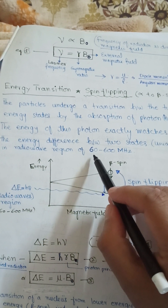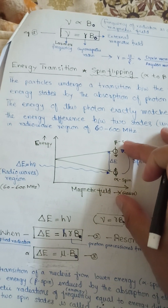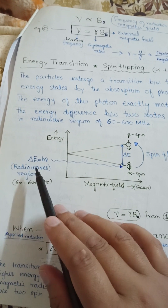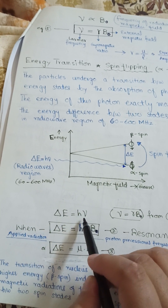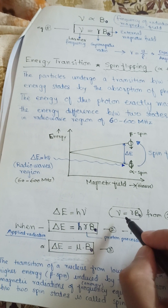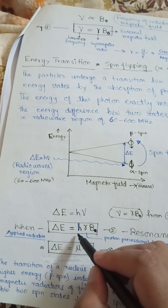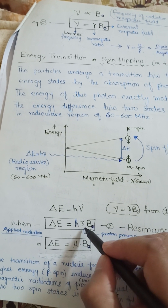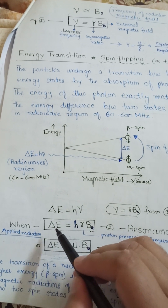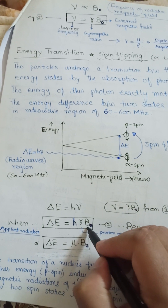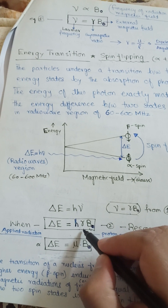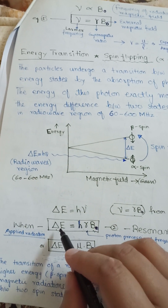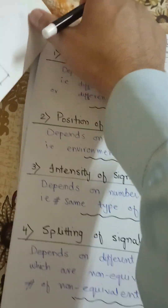This energy difference corresponds to the radio frequency wave region, which is 60 to 600 megahertz. The diagram shows the spin flipping from alpha to beta spin state and the energy absorbed by the nucleus: delta E equals H times nu, where nu is the Larmor frequency, which equals gamma times B₀. Therefore, delta E equals H times gamma times B₀. This is the gyromagnetic ratio. So the energy difference between the two spin states equals Planck's constant times the gyromagnetic ratio times the external magnetic field. If we know the gyromagnetic ratio of the nuclei, we can find the energy difference required for spin flipping.